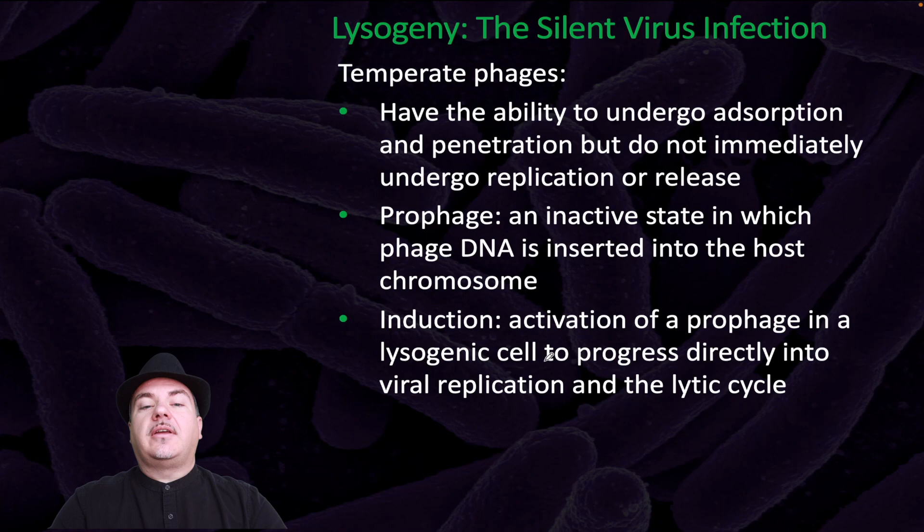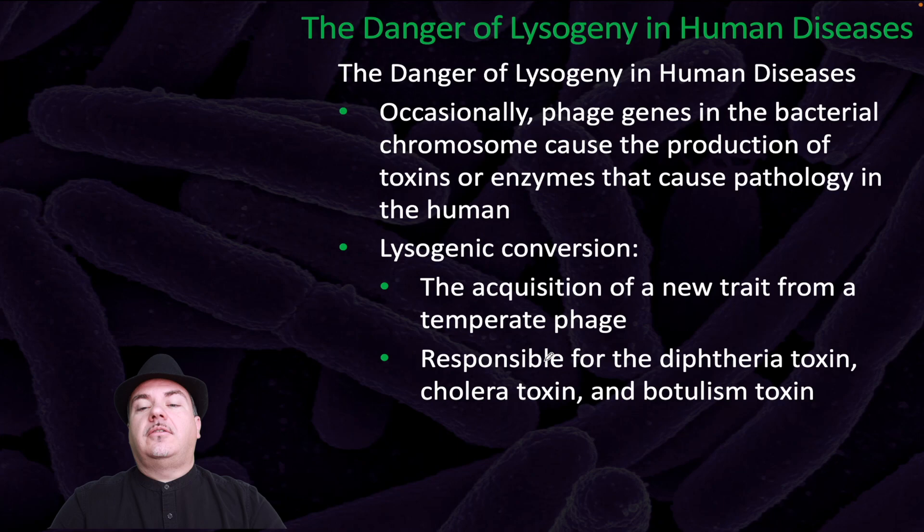The danger of lysogeny in human diseases: occasionally, phage genes enter the bacterial chromosome, causing production of toxins or enzymes that cause pathology in humans. Lysogenic conversion is the acquisition of a new trait from a temperate phage and is responsible for the diphtheria toxin, cholera toxin, and botulotoxin.